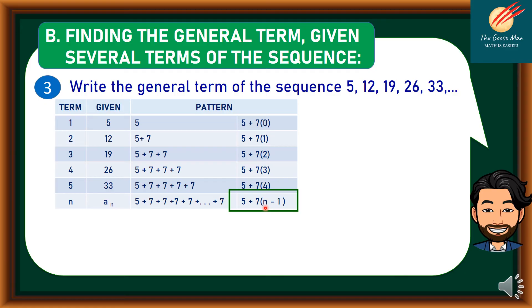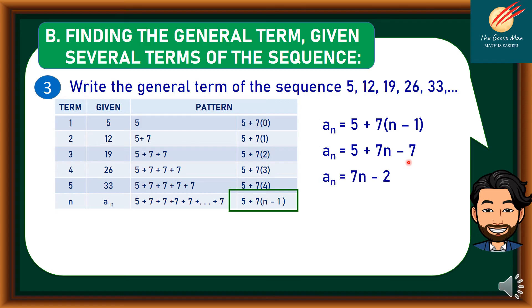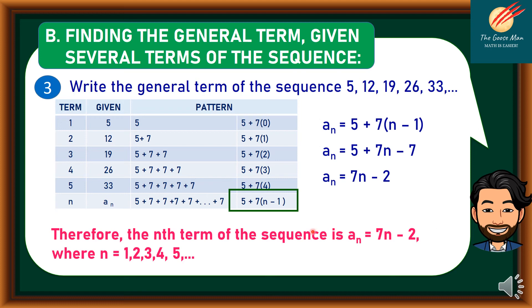So the general term is a sub n equals 5 plus 7 times (n minus 1). Distributing 7, we get a sub n equals 5 plus 7n minus 7. Simplifying further, since 5 minus 7 equals negative 2, the general term is a sub n equals 7n minus 2, where n equals 1, 2, 3, 4, 5, and so on.